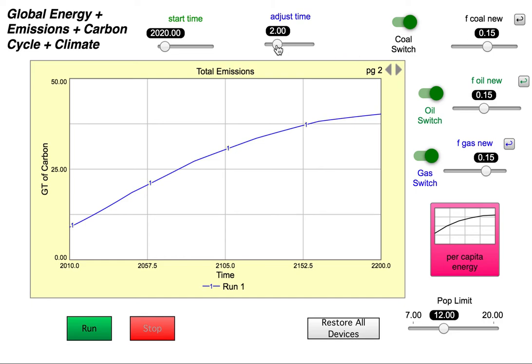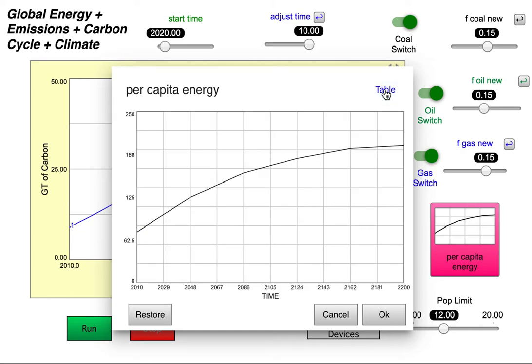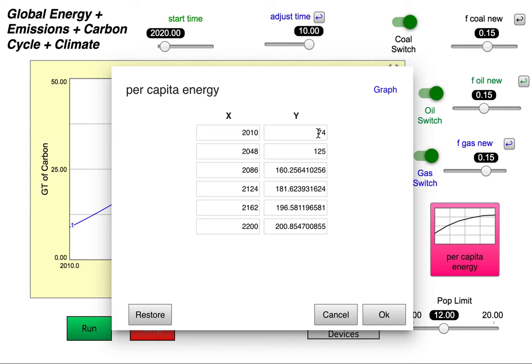We're going to make the transition be a little bit slower, so we'll move the adjust time to 10. And then we're going to change the per capita energy history. And normally when you open this, you just see this graph. If you click on the table here, you see individual entries,